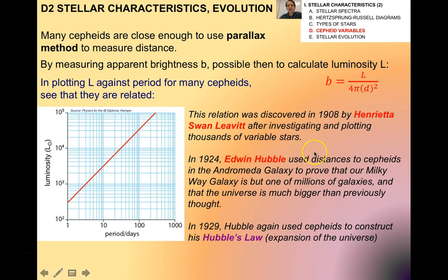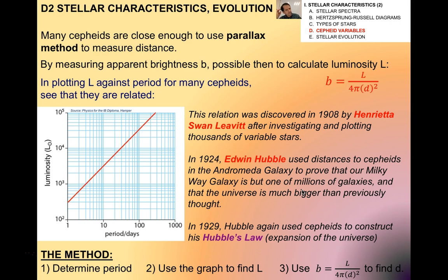This relation was discovered in 1908 by a woman named Henrietta Leavitt after investigating and plotting thousands of variable stars. In 1924, Edwin Hubble, who you've probably heard of, used distances to Cepheids in the Andromeda galaxy. He proved that our Milky Way is but one of millions of galaxies. This was a huge breakthrough in astrophysics and really human knowledge because previously, we didn't have an idea of how big the actual universe is. But by proving that our Milky Way is just one of a million, and that the universe is therefore much bigger than previously thought, this was a huge paradigm shift in thinking. In 1929, five years later, Hubble again used Cepheids to construct his Hubble's Law, which we'll talk about later. So here's the method. First of all, you determine the period. Number two, you use this graph to find the luminosity. And then number three, you use our apparent brightness and luminosity and distance to find D. It's actually quite simple.